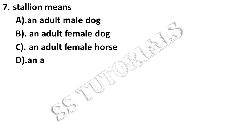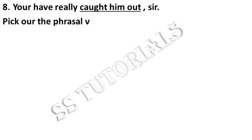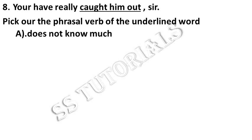Stallion means dash. Answer: An adult male horse. You have really cut him out, sir. Pick out the phrasal verb of the underlined word. Answer: Cut him out.